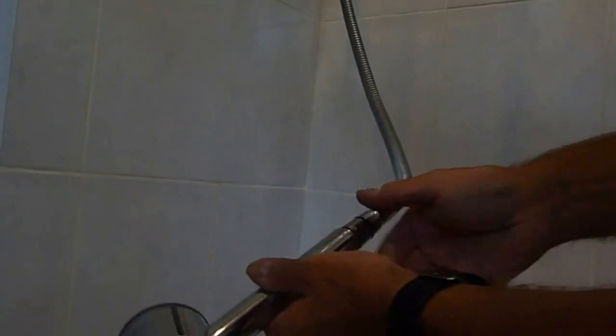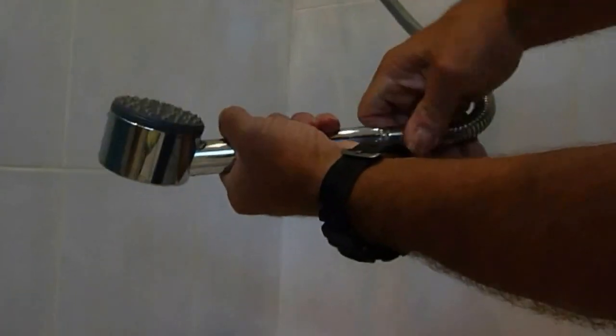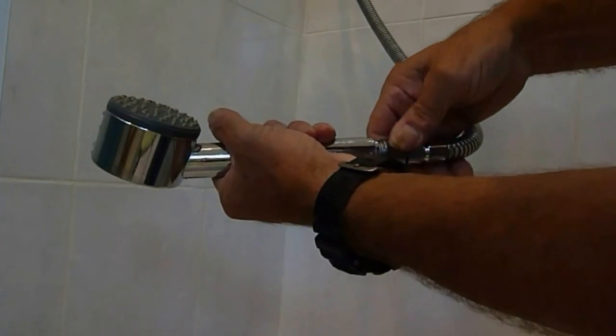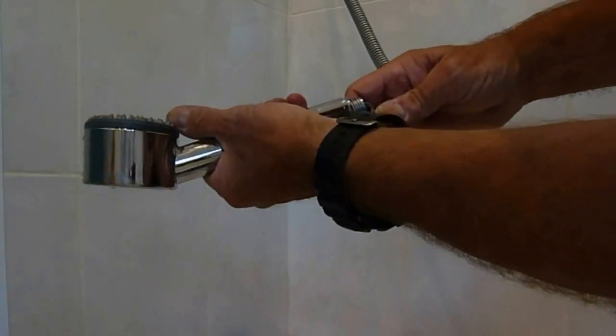I'll show you where we have our shower. It's fairly simple. You can see all you have to do is undo it by hand and never very tight. It shouldn't be. If not, if you have to use grips, please put a bit of cloth around there not to mark the chrome.